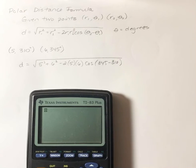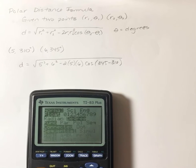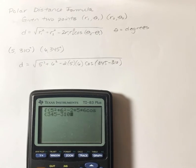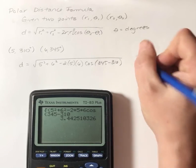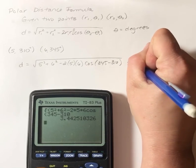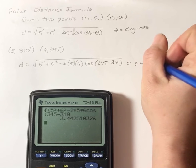So I'm just going to use my calculator. So the square root of 5 squared plus 6 squared minus 2 times 5 times 6 times the cosine of 345 minus 310. And I'm going to make sure that I am in degree mode.